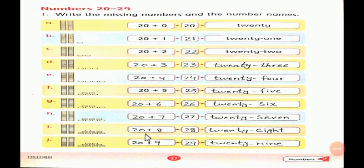20 plus 8 equals 28, we will write the spelling of 28. 20 plus 9 equals 29, we will write the spelling of 29: T-W-E-N-T-Y-N-I-N-E.